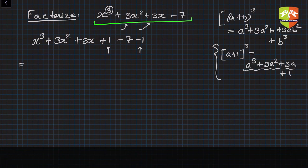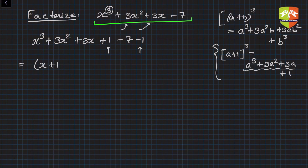Now the advantage is that this becomes (x + 1)³. How? Using this identity. And this whole thing becomes (x + 1)³ and this is -8.